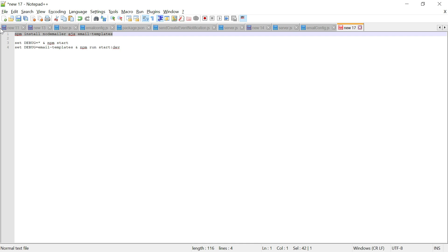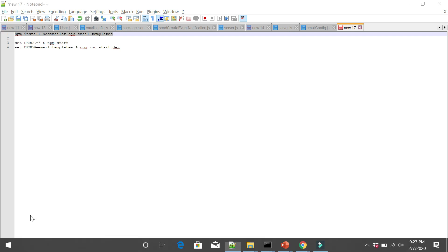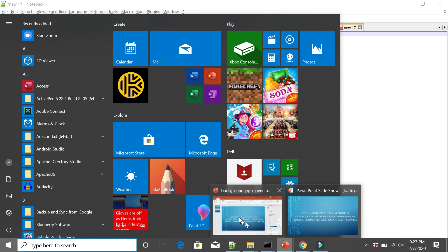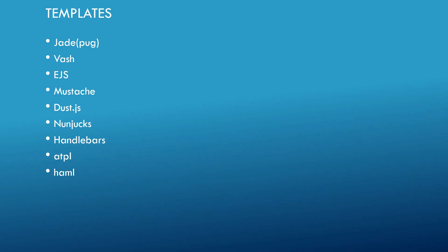Each template engine uses a different language to define an HTML template and inject data into it. It combines the template and data to produce the final HTML. Some sample templating languages are: Jade (also called Pug), Boss, EJS (Embedded JavaScript), Mustache, Dust.js, Nunchucks, Handlebars, Atpl, and Haml. For our demo, we are going to use EJS, the Embedded JavaScript templating engine.